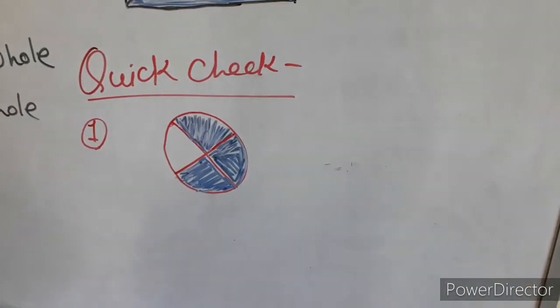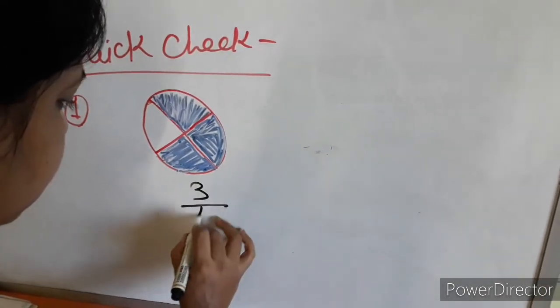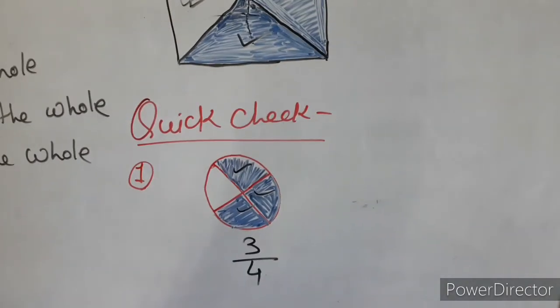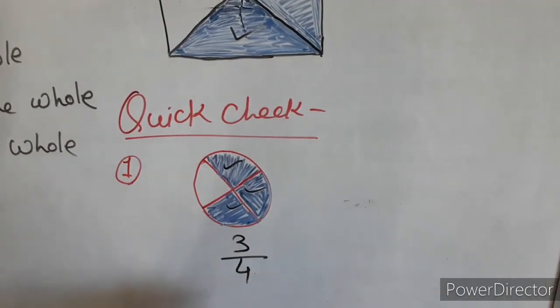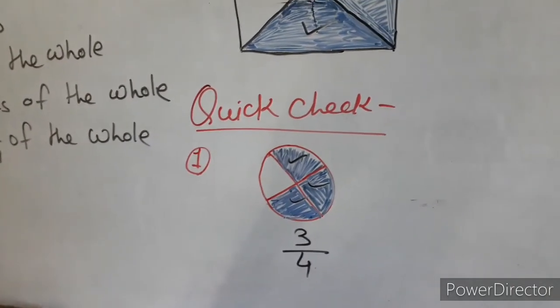This one you can write 3 by 4. 1, 2, 3. The 3 parts are shaded so we can write the 3 by 4th of the whole. So, hope all of you understood.